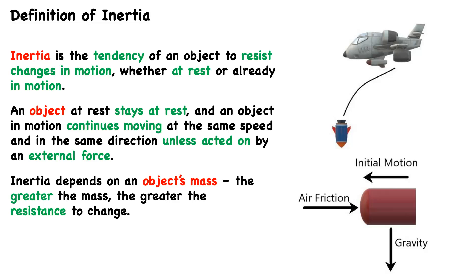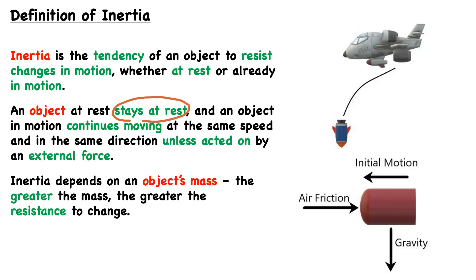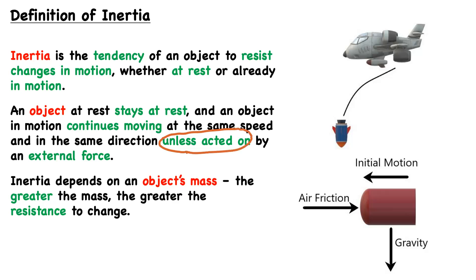In this video we're going to talk about inertia, the centripetal force, and the apparent centrifugal force. We'll start with a discussion of inertia. Inertia is the tendency of an object to resist changes in motion, whether at rest or already in motion. An object at rest stays at rest, and an object in motion continues moving at the same speed and the same direction — unless acted on by an outside or external force.